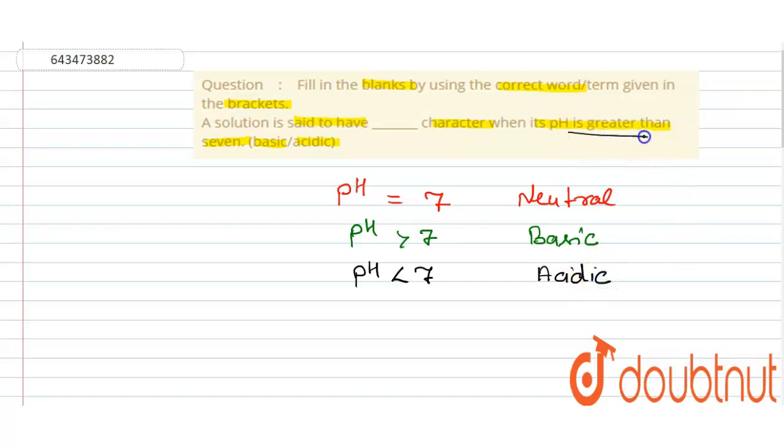So here it is given pH is greater than 7. That means for greater than 7, the solution is basic in nature. So the fill in the blank word will be basic. Thank you.